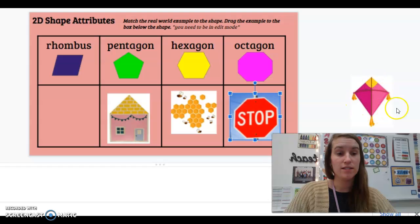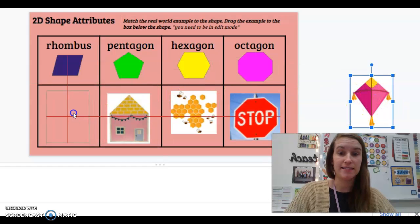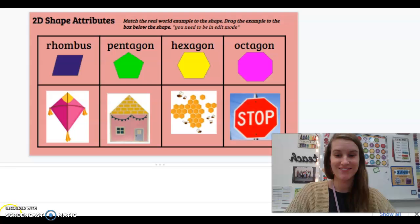And then our four sides, kite, is a rhombus. Give me a thumbs up if you got that page right. Great job. Now you're going to go on Education Galaxy. Thank you.